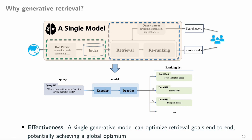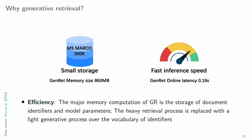Compared with the traditional pipeline paradigm, generative retrieval has several advantages. Firstly, such a single-step generative model dramatically simplifies the search process, can be optimized in an end-to-end manner, and can better leverage the capabilities of larger models. Furthermore, the major memory computation in generative retrieval is the storage of document identifiers and model parameters. The heavy retrieval process is replaced by a light generative process over the vocabulary of identifiers.